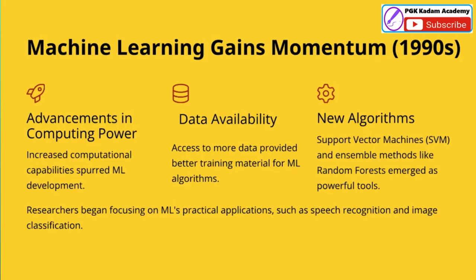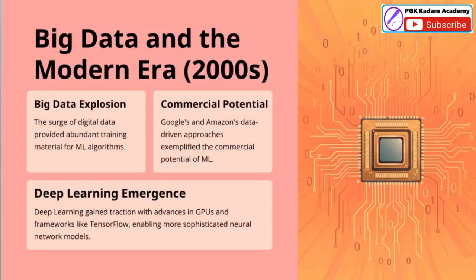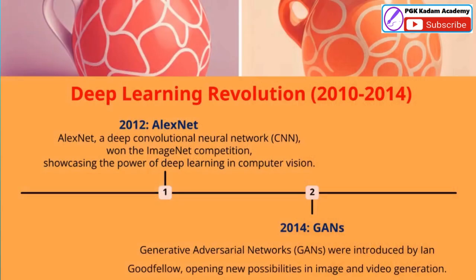Researchers began focusing on practical applications of machine learning, such as speech recognition and image classification, demonstrating its real-world potential. The rise of digital data in the 2000s provided a wealth of training material for machine learning algorithms, fueling their rapid advancement. Tech giants like Google and Amazon demonstrated the immense commercial potential of leveraging data-driven approaches and machine learning. Breakthroughs in GPU technology and the development of powerful deep learning frameworks like TensorFlow enabled the emergence of more sophisticated neural network models. This confluence of factors — the big data explosion, commercial applications, and deep learning advancements — defined the modern era of data and machine learning.